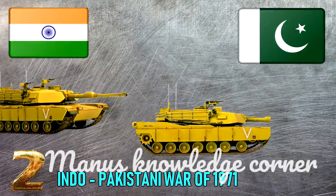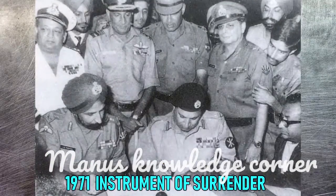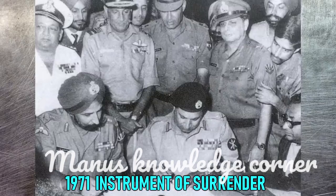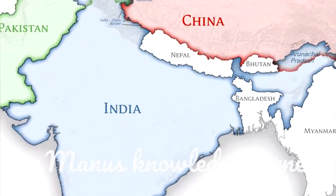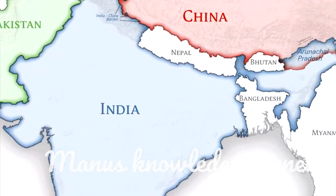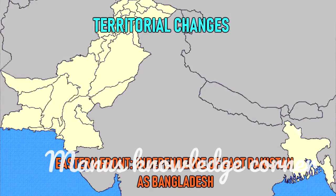Number two: the Indo-Pakistani War of 1971. During the war, Indian and Pakistani militaries simultaneously clashed on the eastern and western fronts. The war ended after the Eastern Command of the Pakistani military signed the instrument of surrender on 16 December 1971 in Dhaka, marking the formation of East Pakistan as the new nation of Bangladesh. Result: decisive Indian victory.